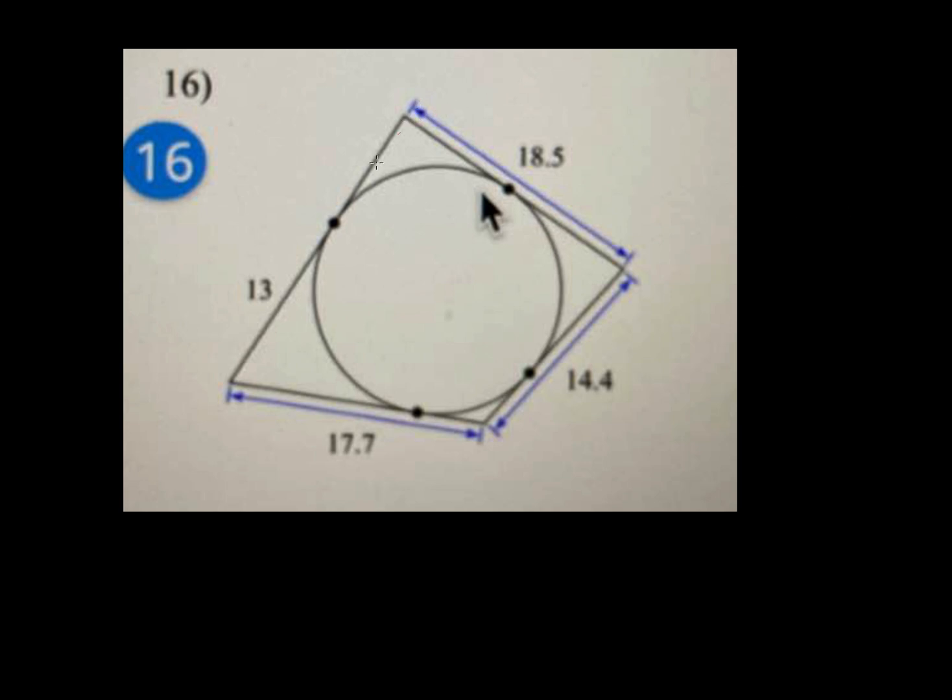Okay, in this problem, all the lines are tangent to the circle, so this side is 13. If that's 13 from here to here, that's also 13.